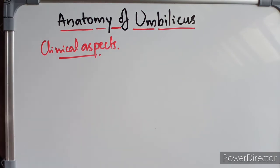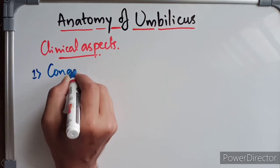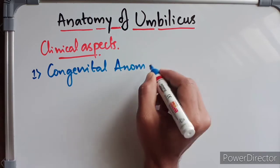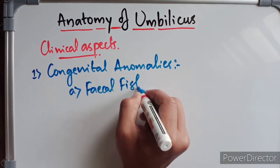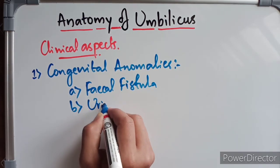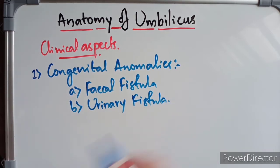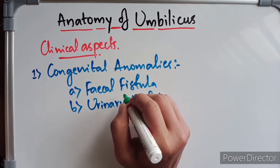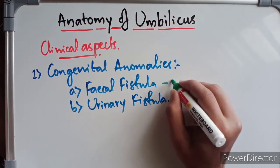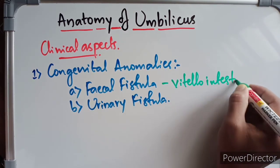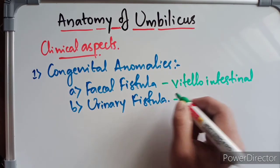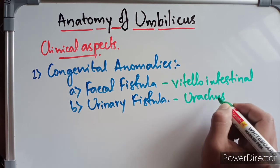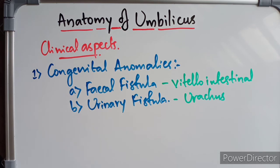Now the clinical aspects of the umbilicus. The first topic is congenital anomalies. The important congenital anomalies are fistulae and exomphalus. Failure of the vitello-intestinal duct to obliterate results in a fecal fistula at the umbilicus. Failure of the urachus to obliterate leads to a urinary fistula at the umbilicus.